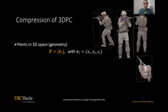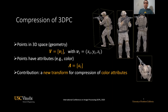Point clouds are represented by points in 3D space, which are basically given by their XYZ coordinates. These points also have attributes such as color, which are denoted by capital A. This work is about a transform for compression of color attributes.